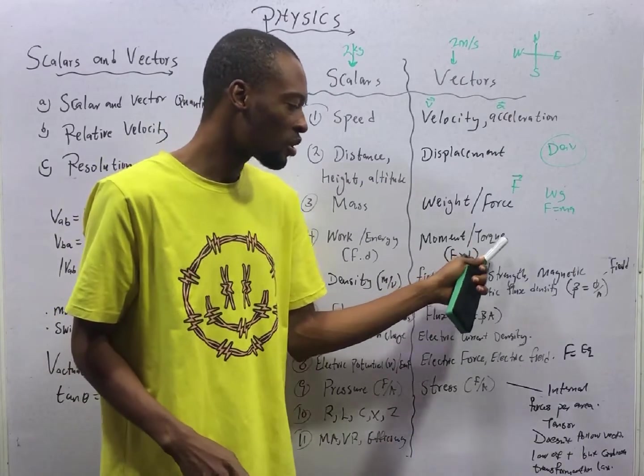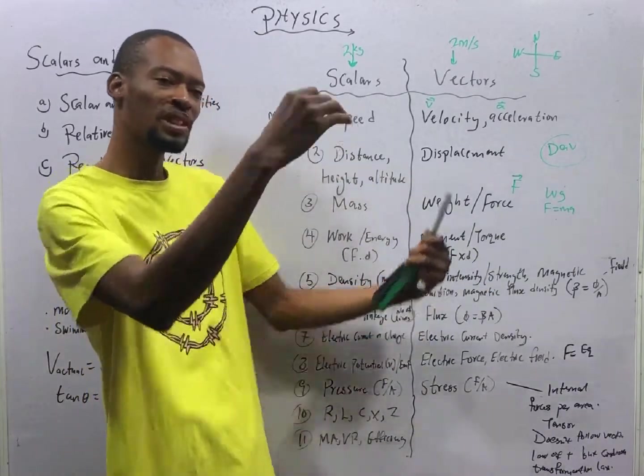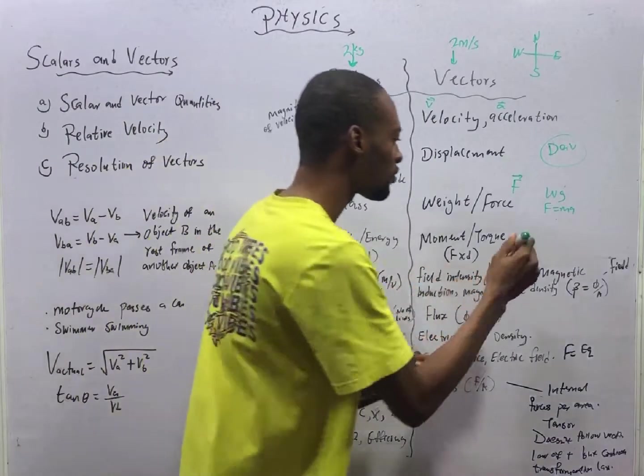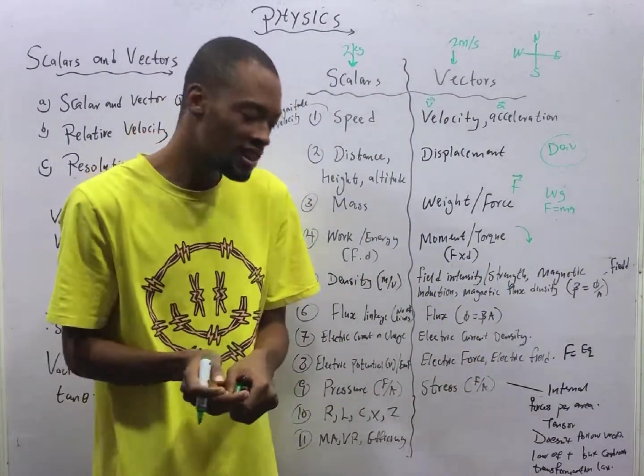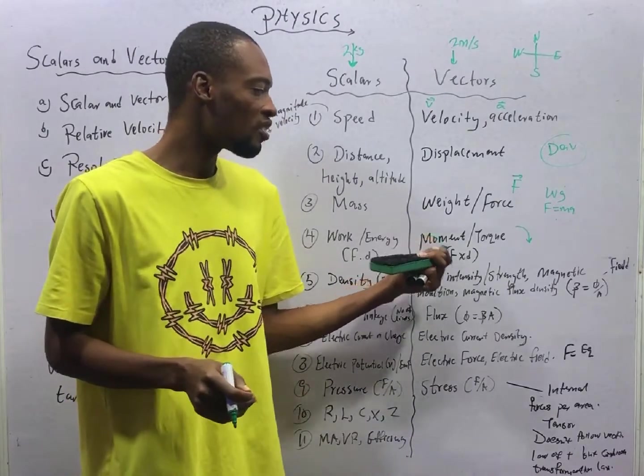But for the vector version of work done and energy, it is moment and torque. Moment, they are force times distance, but they have turning effect. They have direction. So when work or energy possesses direction, they become moment or torque.